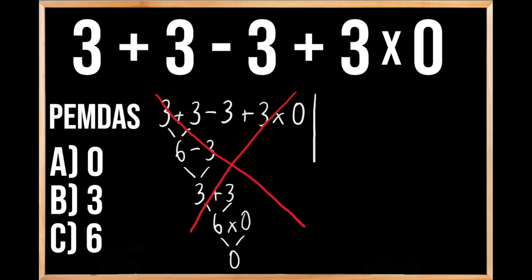So let's try this problem again, and this time we're going to follow the order of operations to see if we get a different answer. Our original problem was 3 plus 3 minus 3 plus 3 times 0. When solving a problem like this with multiple operations, we need to follow the order of operations. Over on the left-hand side we can see the acronym PEMDAS, which stands for the order of priorities when solving problems like this.